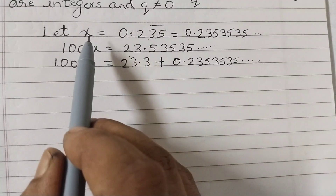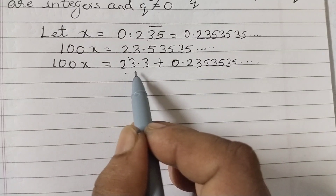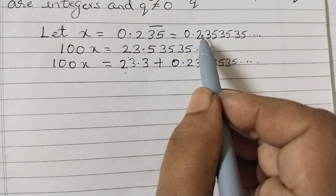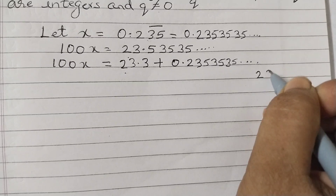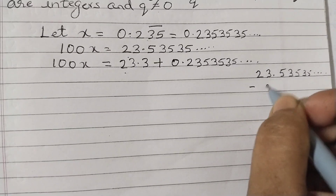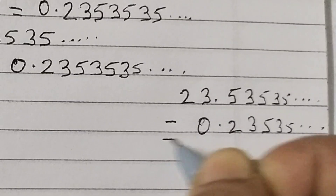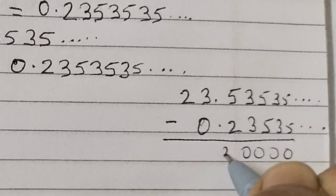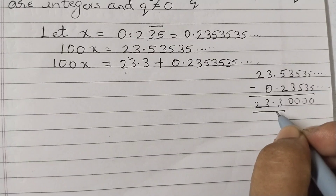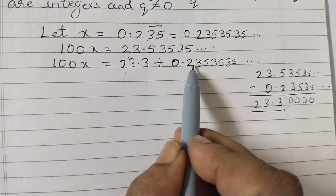This decimal number 0.2353535... is equal to x. Some students find it difficult to get this number — how to get 23.3. To get it, subtract: 23.53535... minus 0.2353535... The repeating decimal parts cancel out, and you are left with 23.3. This is how you can get that number.